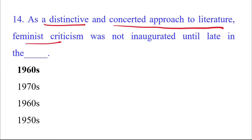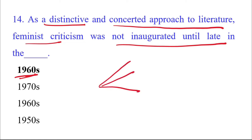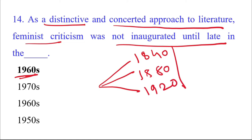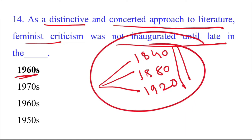As a distinctive and concerted approach to literature, feminist criticism was not inaugurated until the late 1960s. Although feminism had different phases — the first starting in 1840, the second in 1880, and the third in 1920 — none of those three phases were as important as what happened after the 1960s, when various writers tried to give feminism a new picture, new knowledge, and new ideas.